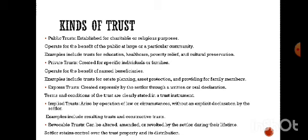Third, an express trust is created expressly by the settlor through a written or oral declaration, with terms and conditions clearly stated in the trust instrument. Fourth, an implied trust arises by operation of law or circumstances without explicit declaration by the settlor — there is no express declaration by words written or spoken; we must consider the circumstances. Examples include resulting trusts and constructive trusts.